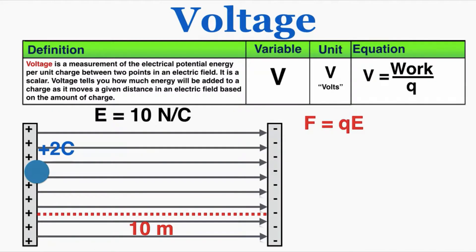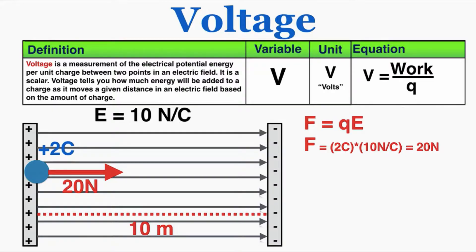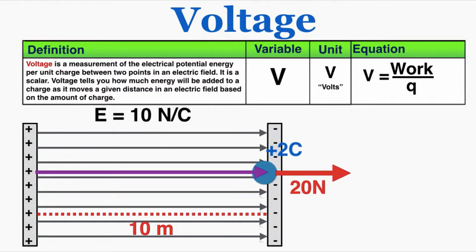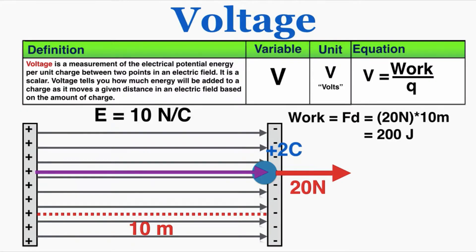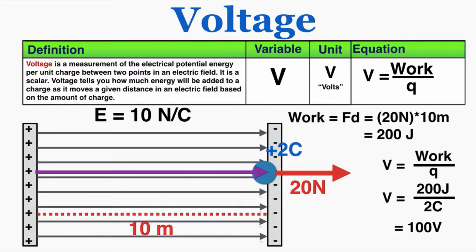The force a field provides equals the charge times the field, so here that's 20 newtons. Twenty newtons of force constantly act on this 2-coulomb charge, and because the charge is positive it points in the direction of the field. The field applies 20 newtons for 10 meters, so work equals 20 newtons times 10 meters, which equals 200 joules. Dividing the work by the charge gives a voltage of 100 volts across those 10 meters.